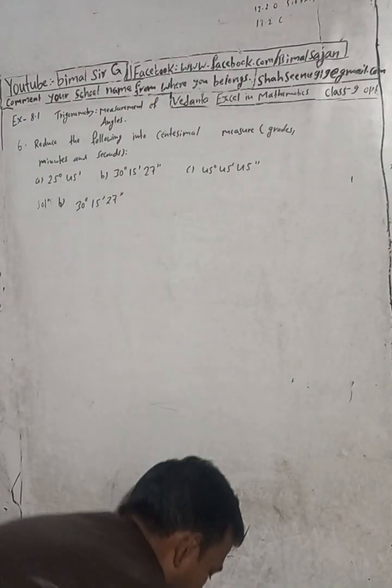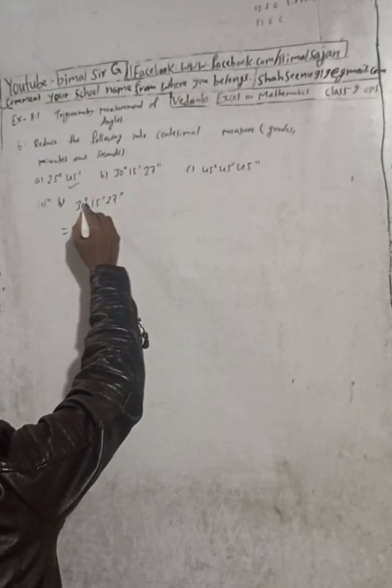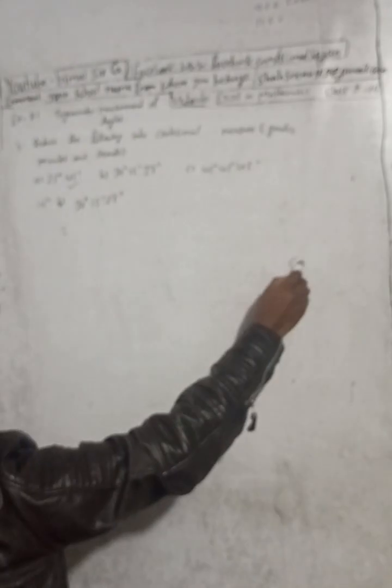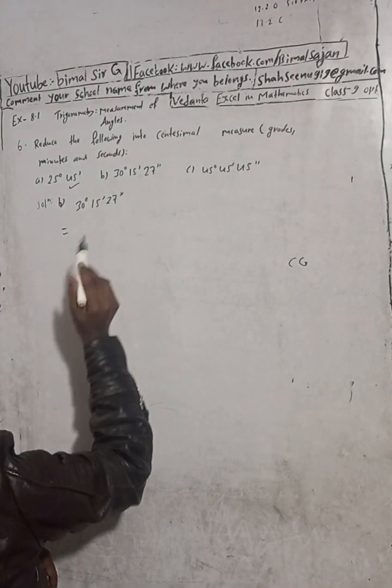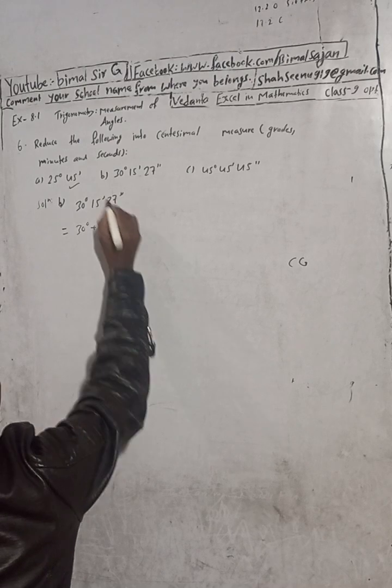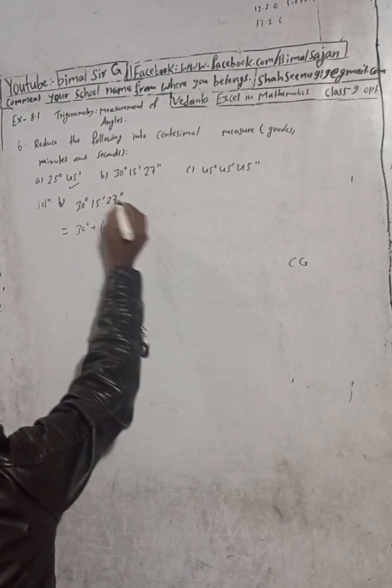Okay, next question is 6b: 30 degrees, 15 minutes, and 27 seconds. The next step is to change the grade system.